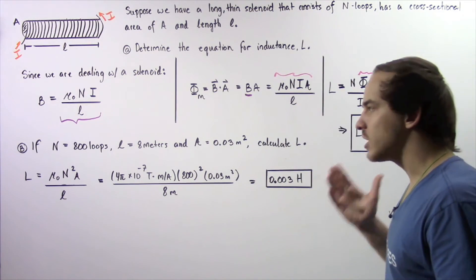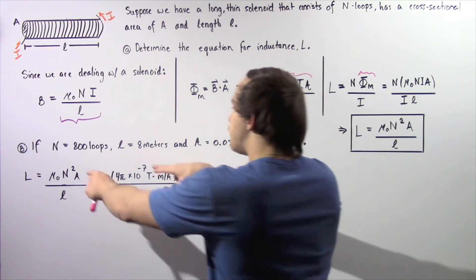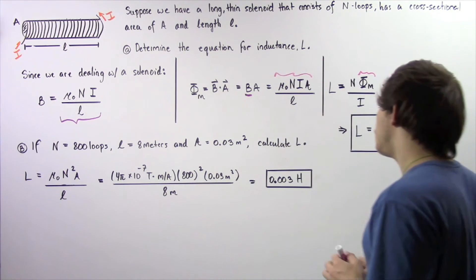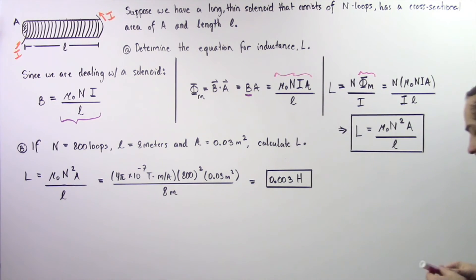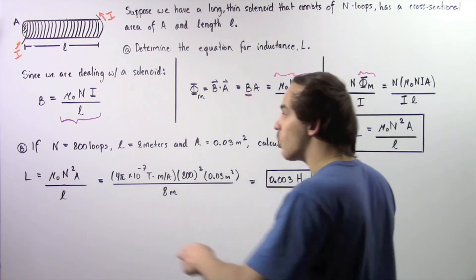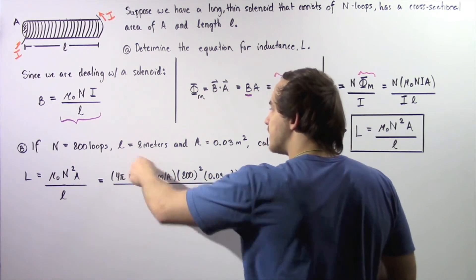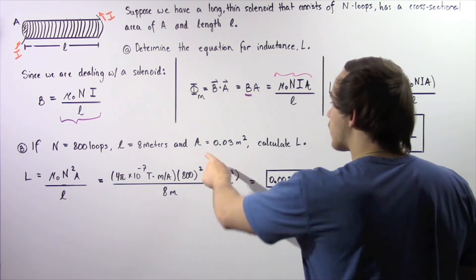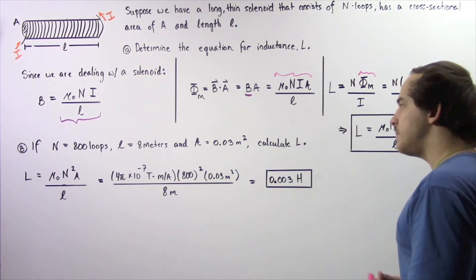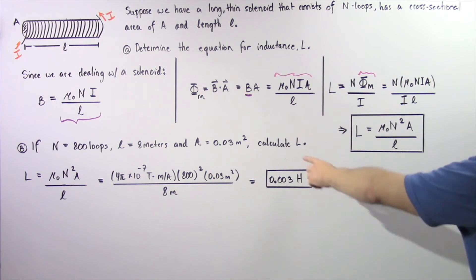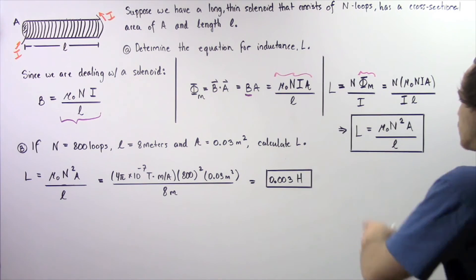In part B, we are given the following values and we want to use this equation to calculate. If the number of loops is 800, if our length is 8 meters and if our area is 0.03 meters squared, calculate our inductance L.